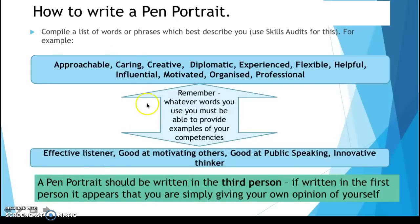To write a pen portrait, compile a list of words or phrases which best describe you from the skills audits. For example, the skills audits might say you are approachable, caring, creative, diplomatic, flexible, helpful, influential, motivated, organized, or professional — though remember whatever words you use, you must be able to provide examples of your competencies, such as effective listener, good at motivating others, good at speaking in public, or innovative thinker.